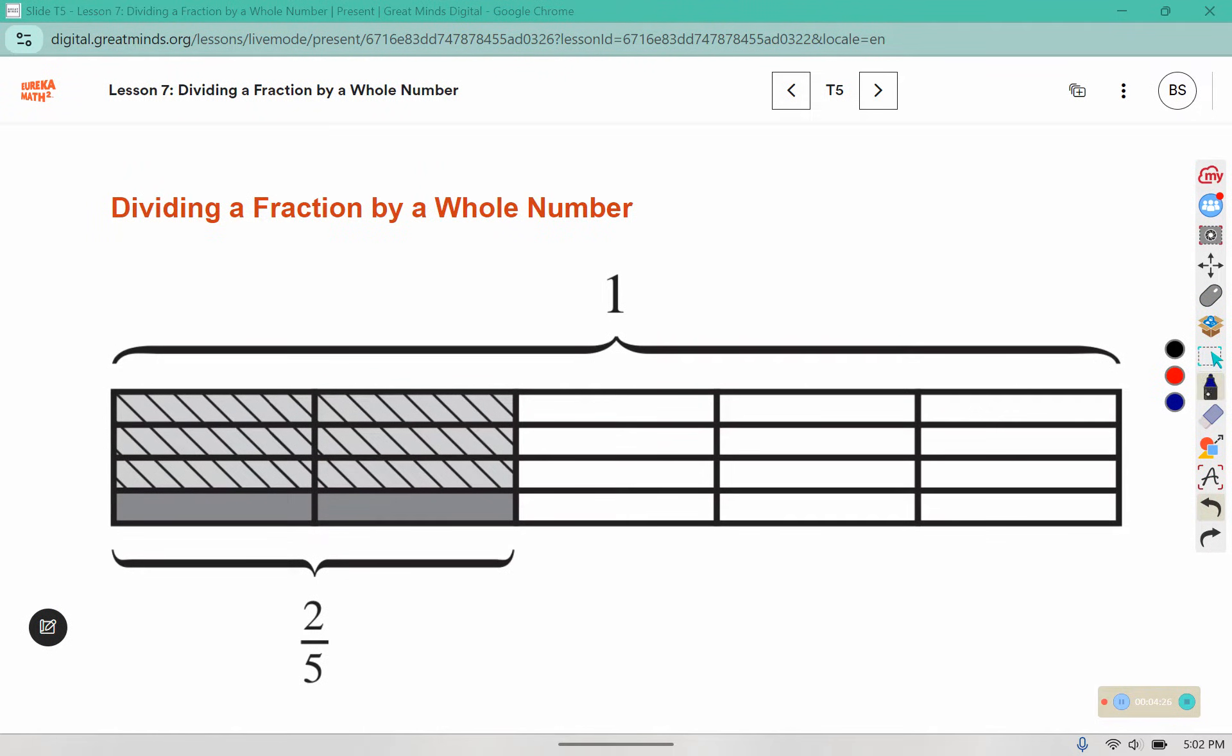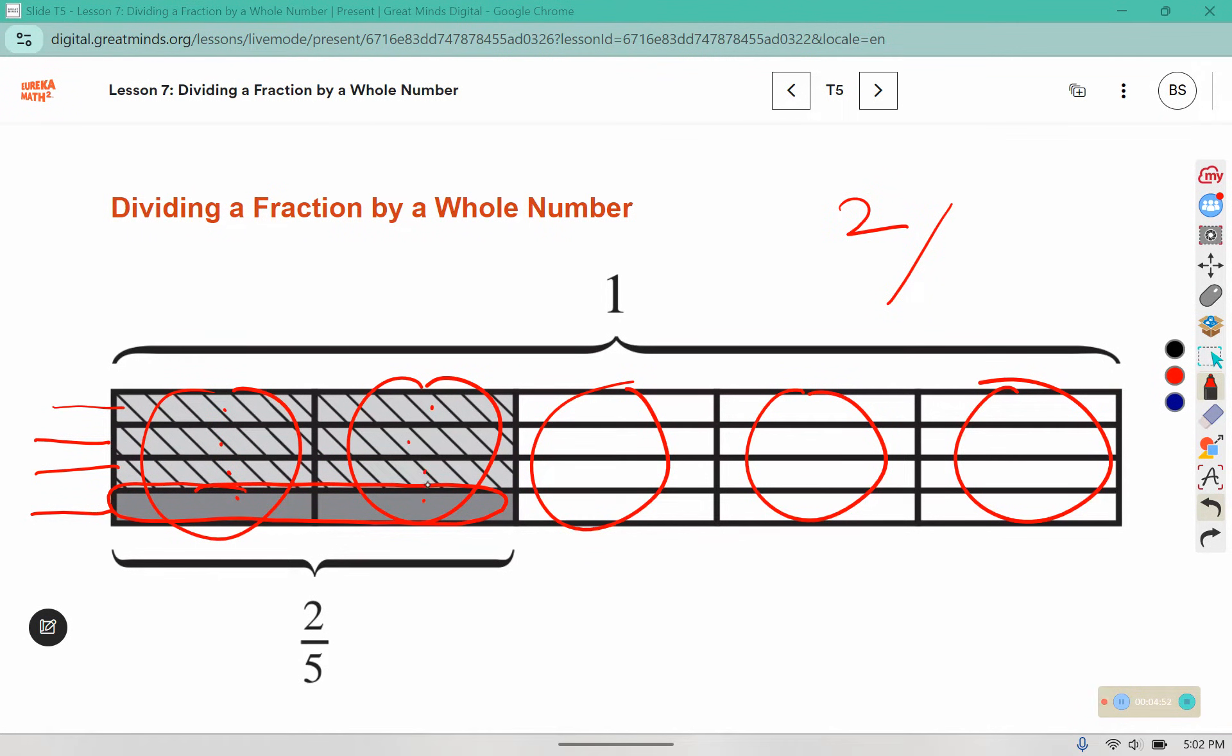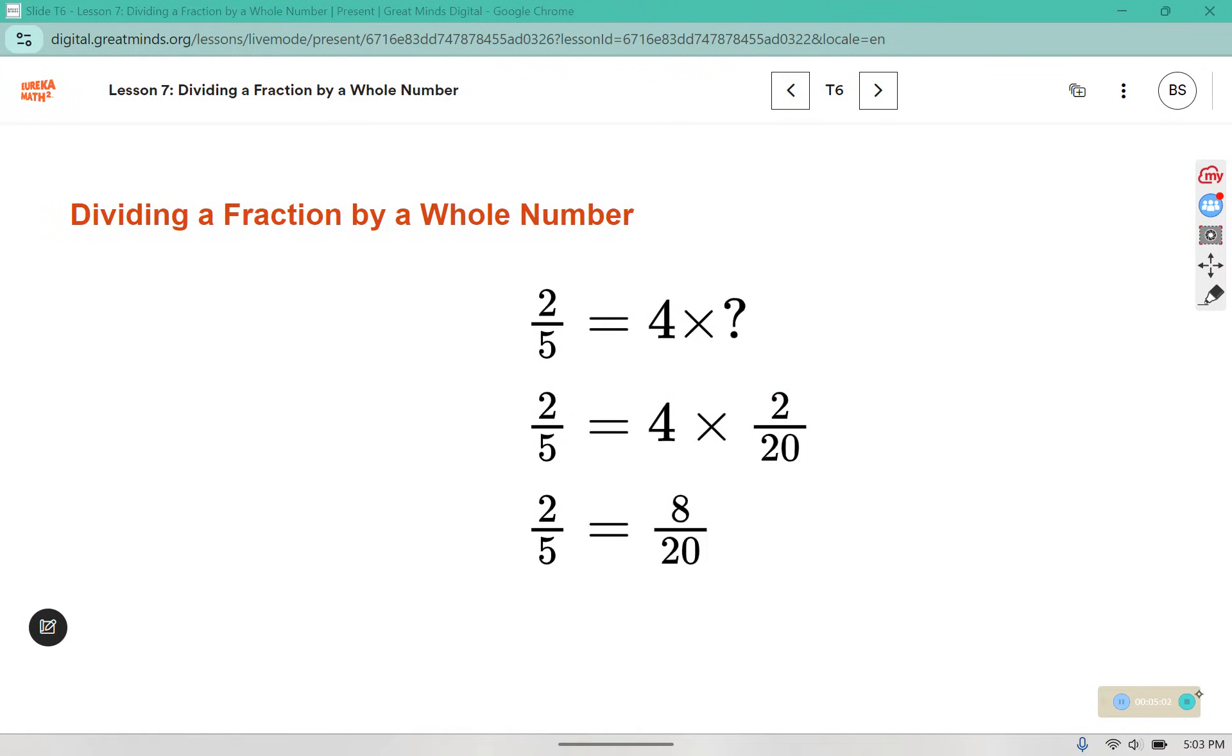So here they've taken 2/5. You can see 2 out of 5. And then we split each one into 4 parts, so they've split them this way into 4 different sections. And we have 2 out of 1, 2, 3, 4, 5, 6, 7, 8, 9, 10, 11, 12, 13, 14, 15, 16, 17, 18, 19, 20. So 4 times what number would be 2/5? 4 times 2 is 8. There's an invisible one down here. 1 times 20 is 20, and that reduces to 2/5.